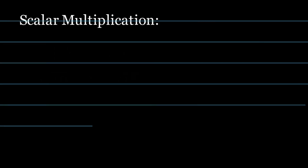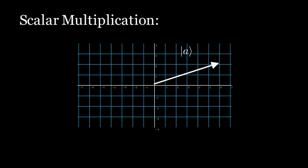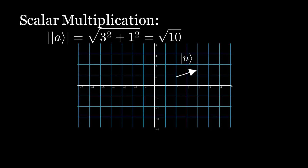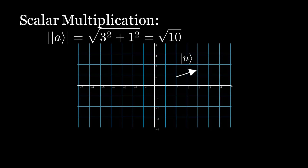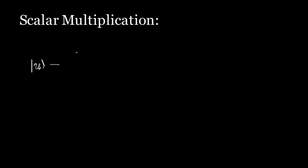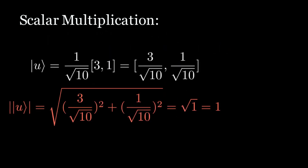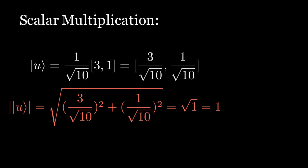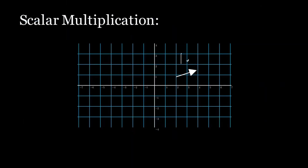We can use this fact to get vectors of different lengths pointing in the same direction. In particular, we often want a unit vector pointing in the direction of a non-unit vector. Given any non-zero ket a, if we multiply ket a by the inverse of its length we obtain a unit vector. For example, if ket a equals (3, 1), its length is √10. Letting ket u equal (1/√10) × (3, 1), the length of u equals 1, so ket u is a unit vector pointing in the same direction as ket a.